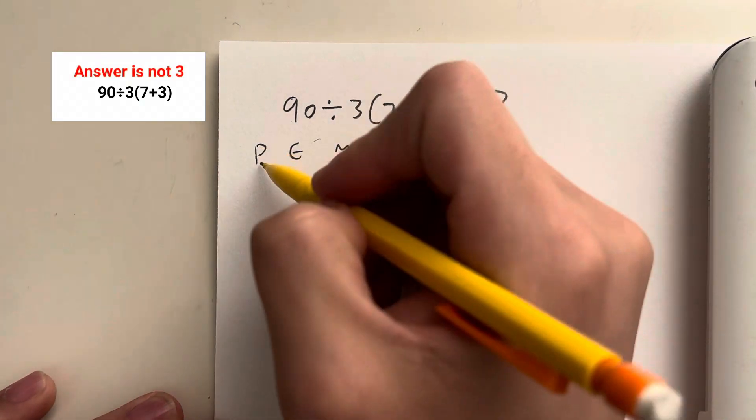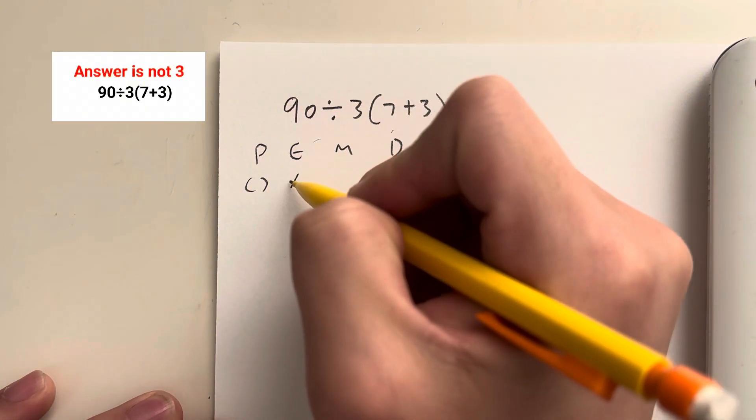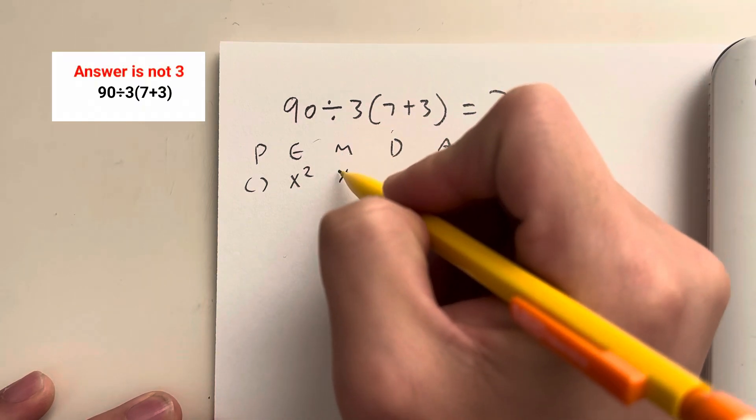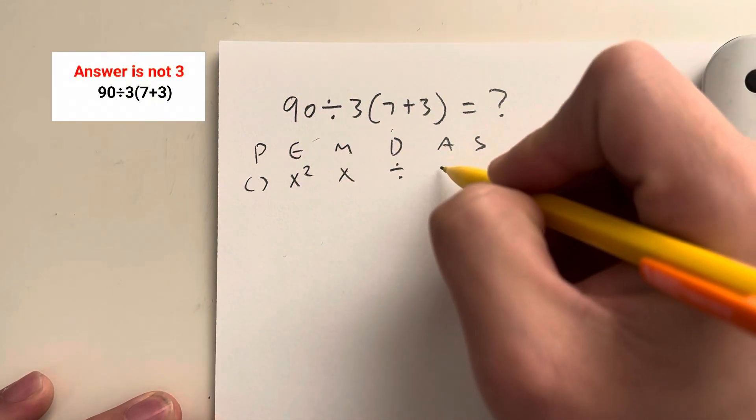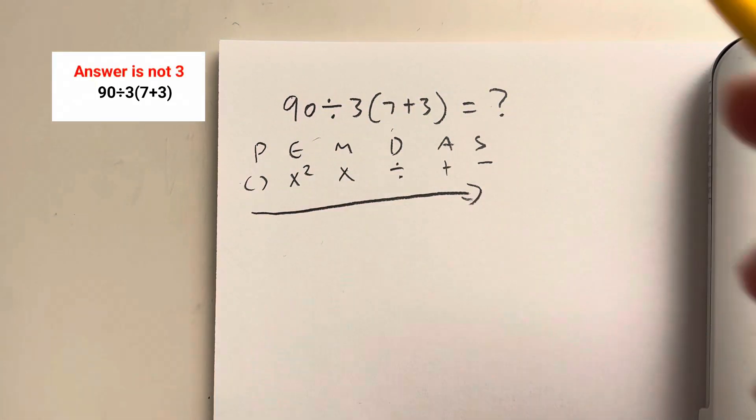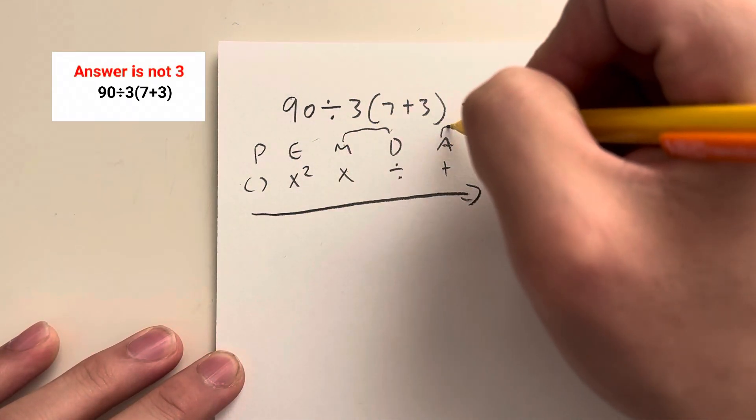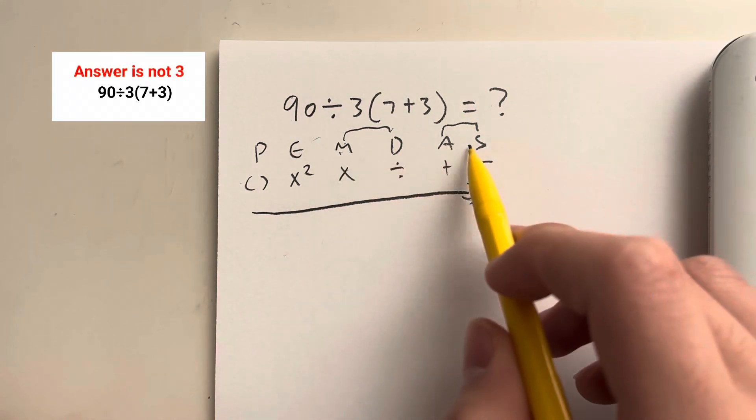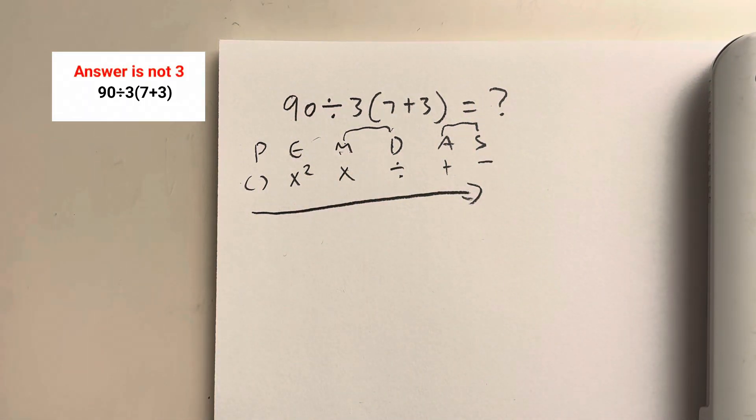What does each of these stand for? P stands for parentheses, E stands for exponents, M is for multiplication, D is for division, A is for addition, and S is for subtraction. We're going to go in this order from left to right, but then M and D as well as A and S come left to right as you see it. So you'll see that in a second how that works.